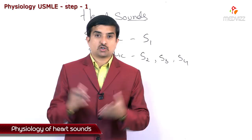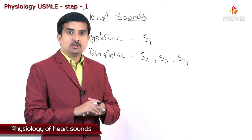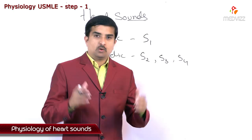A unilateral increase in the cardiac output of a ventricle delays the closure of valves of S2. Not only that, stenotic valves open more slowly and close more slowly, which means they stay open for a longer duration of time, so there would be a delay in the closure of those valves.